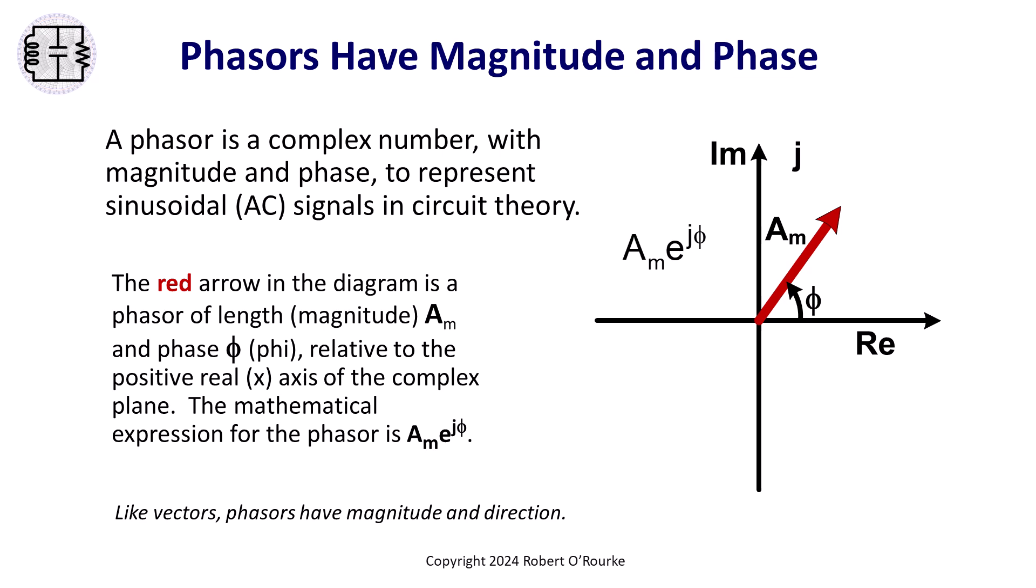Phasors are complex numbers with magnitude and phase. Phasors represent sinusoidal voltage and current signals in circuit theory. The red arrow is a phasor plotted in the complex plane.